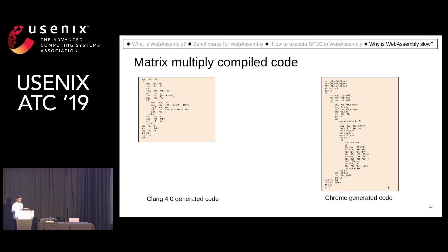On the other hand, we have Chrome-generated code, and we can see that the Chrome-generated code is around 2x more instructions as compared to Clang.